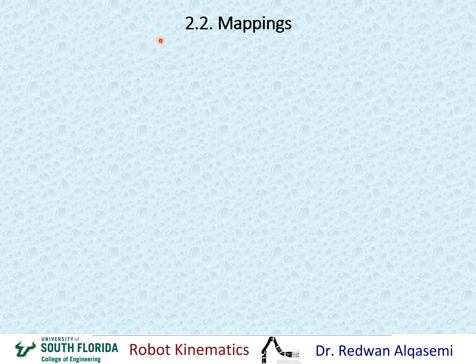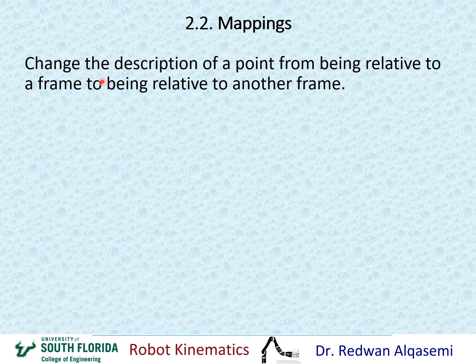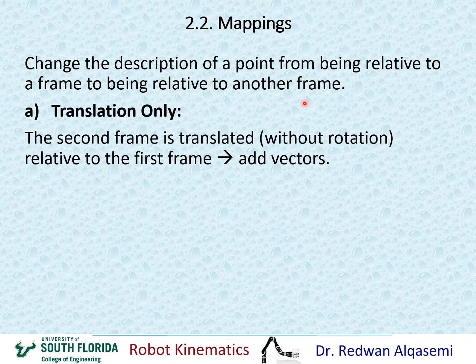I'm going to start with the second topic here, which is mappings. This is similar to the descriptions that we've done before, but this is a different application. The definition of mappings is: change the description of a point from being relative to a frame to being relative to another frame. As we did earlier with descriptions, we're going to take translation only, then rotation only, and then a combination of translation and rotation.